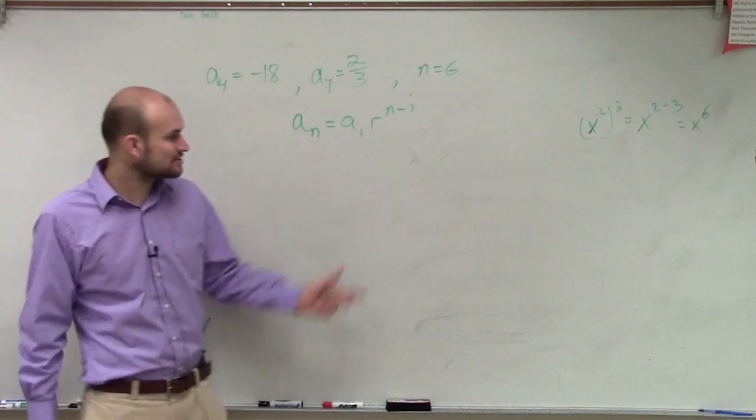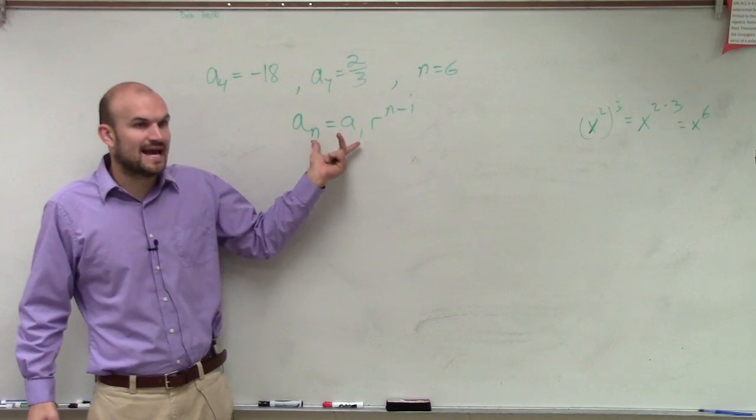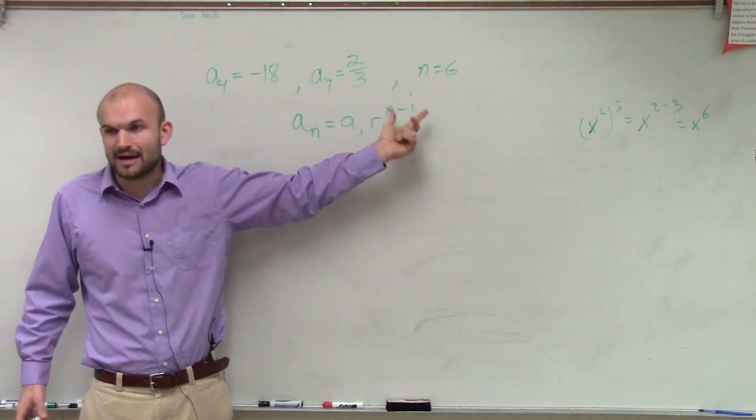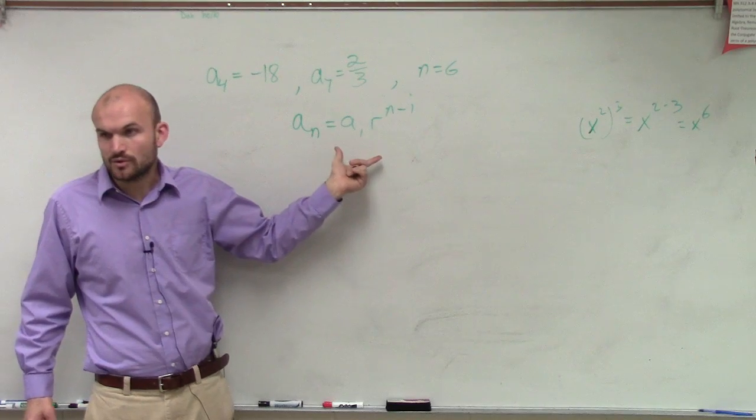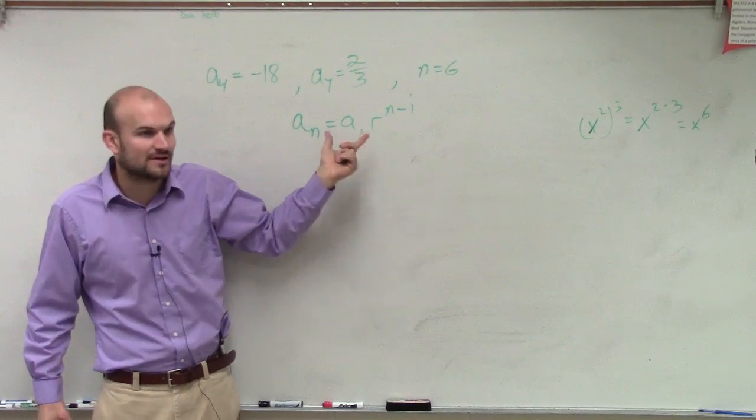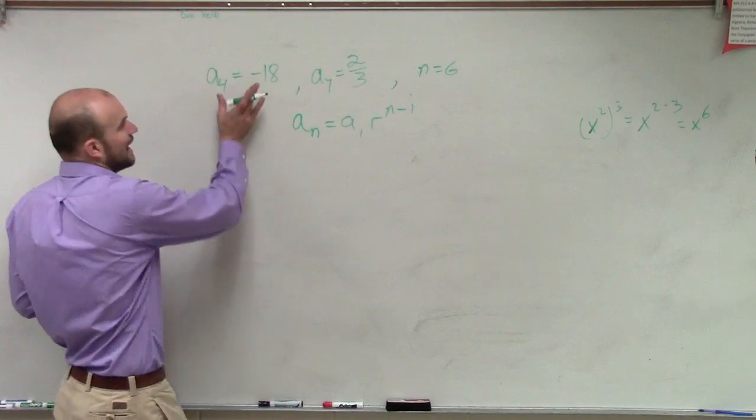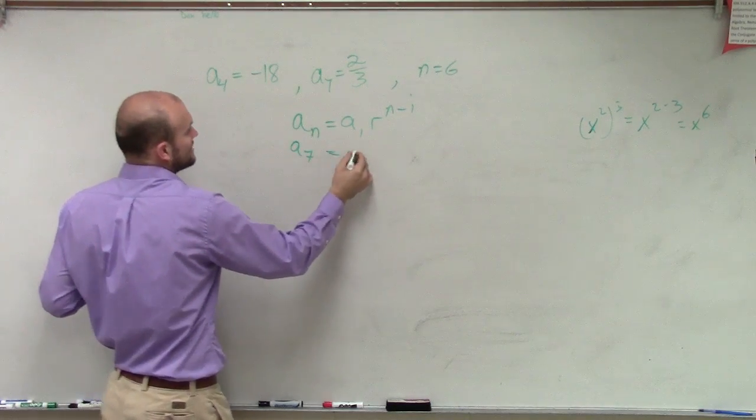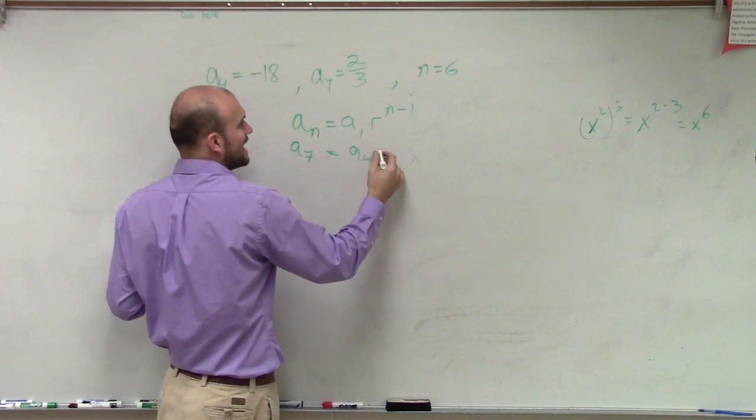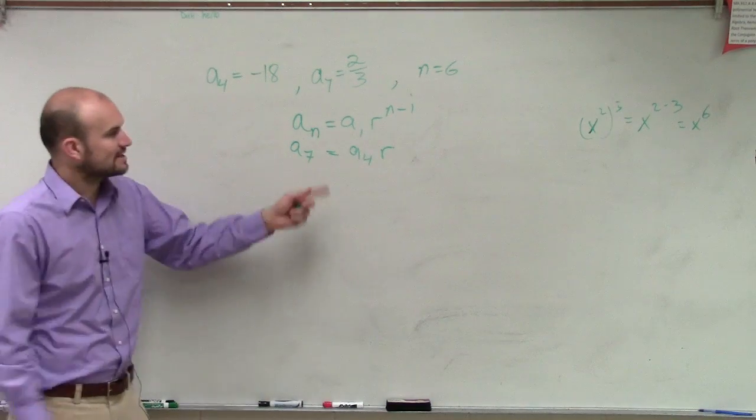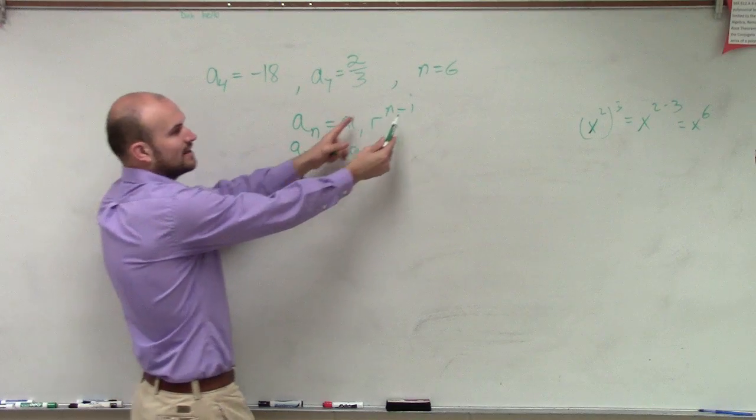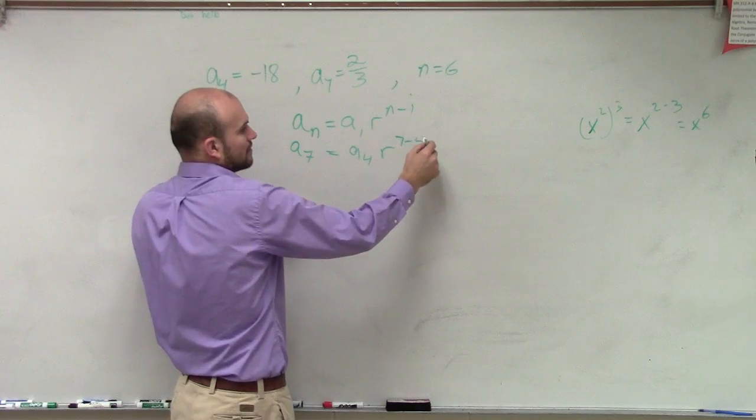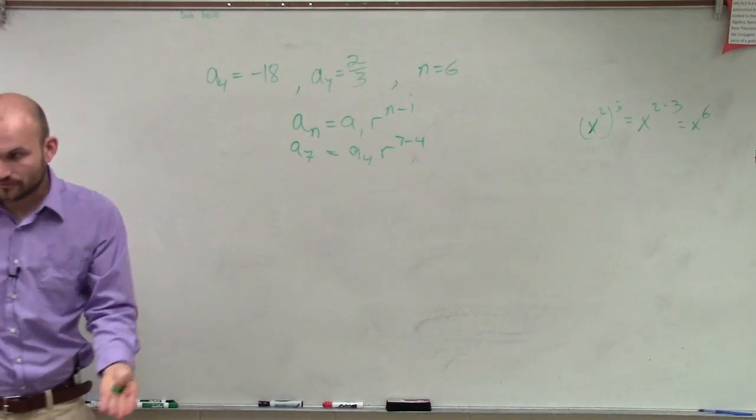So one thing just to notice, ladies and gentlemen, here's my two terms, n and 1, that what you're raising the power up to is just n minus 1, so it's just the difference in these two values. So let's go to my case. I don't know what a sub 1 is, however I can say a sub 7 is equal to a sub 4 times r. But then notice I'm taking the difference of these two as my exponent, so the difference of these two is going to be 3, right?